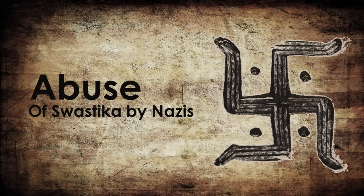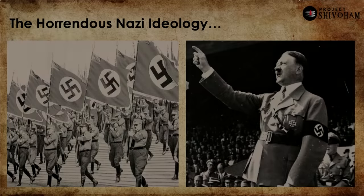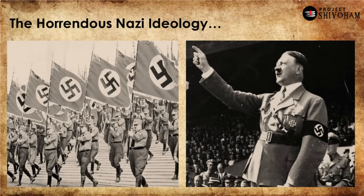That brings us to the second chapter — the abuse of swastika by the Nazis. I want to talk as little as possible about the horrendous Nazi ideology. You have definitely heard of Adolf Hitler — a barbaric dictator in Germany whose ideology was that certain races of people are pure and certain races are impure. They persecuted the Jews in millions, in what is often called the Holocaust. The swastika was abused by the Nazis as their emblem.